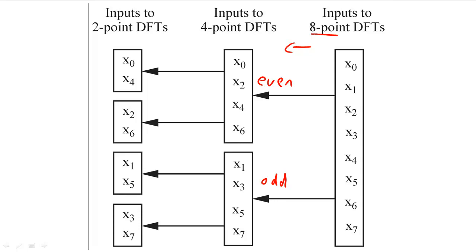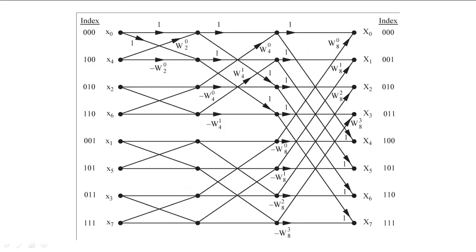We would then break each of the four-sample DFTs into two two-sample DFTs with every other sample being used by a different butterfly. The eight-sample DFT would then be calculated by using four two-sample butterflies, two four-sample butterflies, and one eight-sample butterfly.